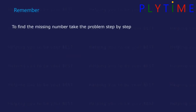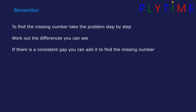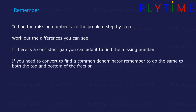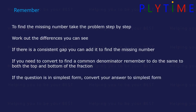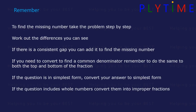Remember: to find the missing number, take the problem step by step. Work out the differences that you can see, and if there's a consistent gap, you can add it to find the missing number. If you need to convert to find a common denominator, remember to do the same to both the top and the bottom of the fraction. If the answer needs simplifying, convert it to the simplest form. If the question includes whole numbers, convert them to improper fractions. Remember to double check your answer.